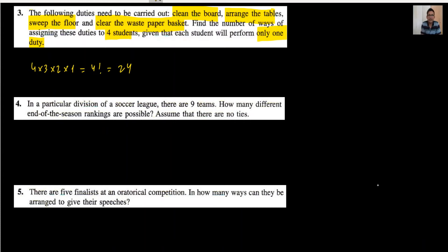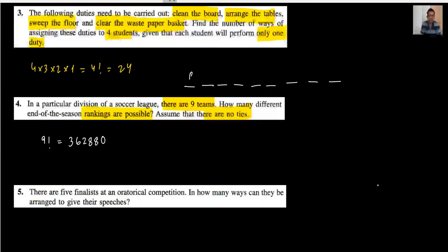Question number 4: in a particular division soccer league there are 9 teams. How many end-of-season rankings are possible with no ties? Ranking means first, second, third through ninth — so it's 9 factorial, which equals 362,880. These 9 teams can occupy any rank position: team A can be first, B second, and so on, giving 9 possibilities for the first rank, then 8, 7, 6, 5, 4, 3, 2, and 1, multiplied by the basic counting principle.